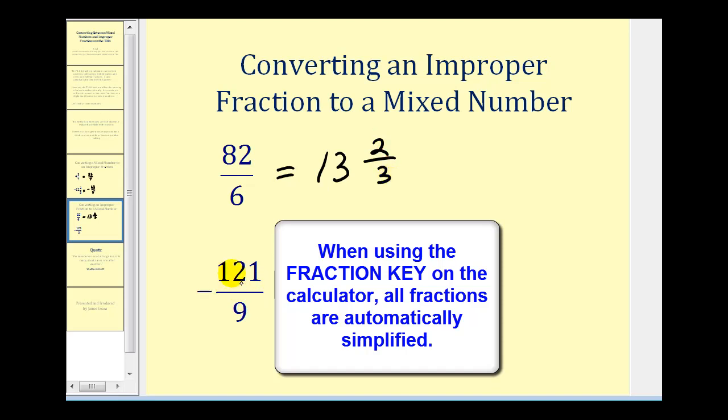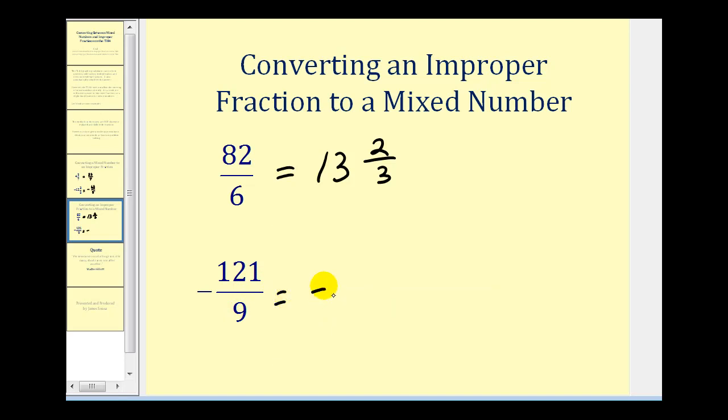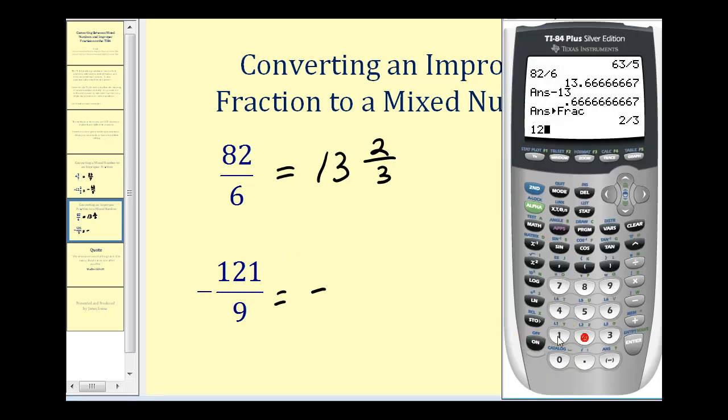And then for the next one, negative one hundred twenty-one-ninths. Again we're going to go ahead and put down the negative sign, and then we'll convert one hundred twenty-one over nine into a mixed number. So we'll enter one hundred twenty-one divided by nine and press enter. Again notice the whole number of the mixed number is thirteen.